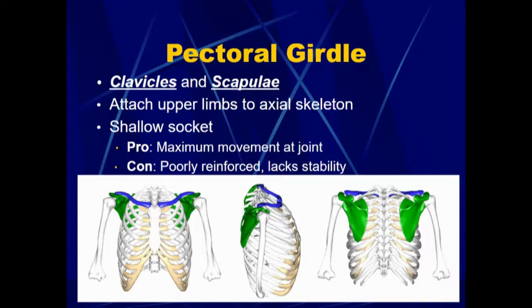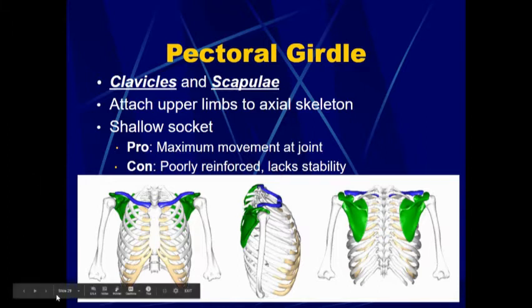So there are going to be trade-offs. We are going to have maximum movement with our upper limbs, but the price we pay for that is that it is poorly reinforced and it is more prone to dislocation because of that.